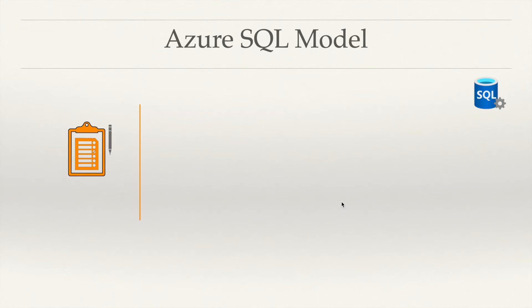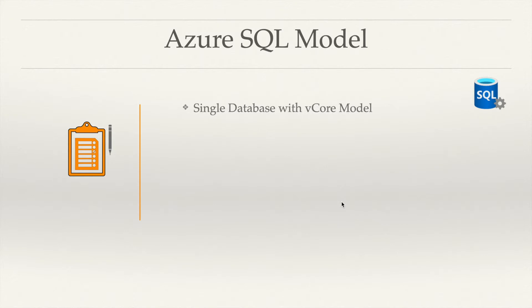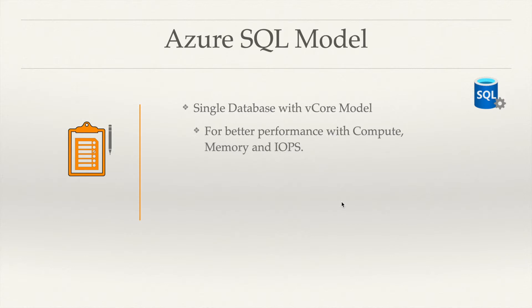Let's look at the SQL Azure models being offered. As seen in our demonstration, when you create an Azure SQL server you have the option to create a single database or an elastic pool database. SQL server offers two different types of Azure SQL as a service. The first is the single database, which comes with the vCore model, designed for better performance with compute, memory, and IOPS. Based on the type of configuration you choose — standard, premium, or general purpose v2 — you get a dedicated number of vCores assigned.